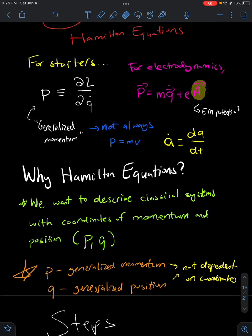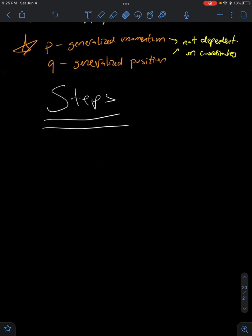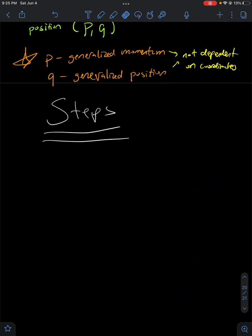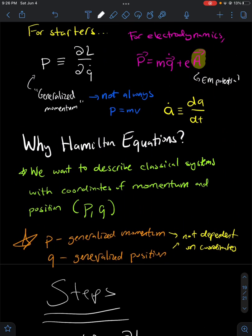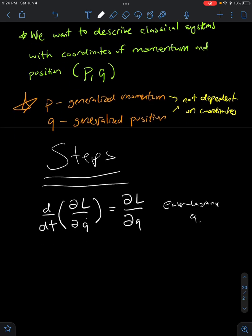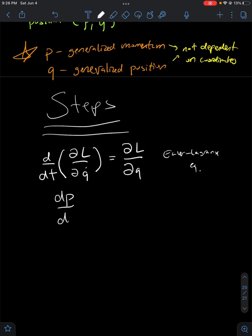So with all that said, let's actually begin with our derivation steps. To derive the Hamilton equations, we first have to use the Euler-Lagrange equations, which state that d/dt of ∂L/∂q̇ equals ∂L/∂q. Since we defined the generalized momentum as p = ∂L/∂q̇, this means that dp/dt is going to equal ∂L/∂q.